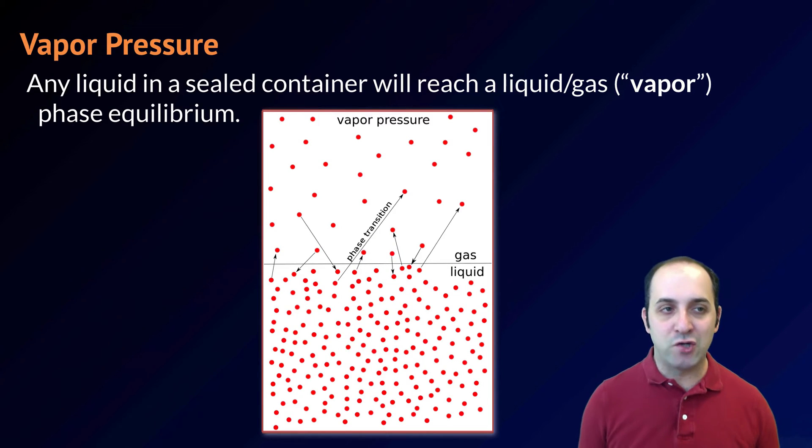In order to understand vapor pressure, you should think about a liquid put into a sealed container. If we take a liquid and we put it into a sealed container, we're going to find that individual particles of that liquid will, on occasion, become gas through the process of evaporation.